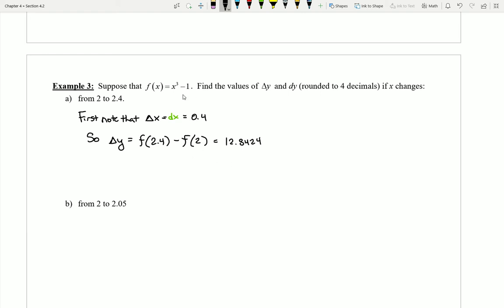You could double check that. If I plug in the value of 2, 2 to the 3rd power is 8 and 8 minus 1 is 7. So this is my later y value, this is my earlier y value. The difference here is 5.8424. So there's my value of delta y.